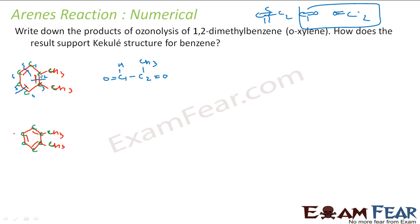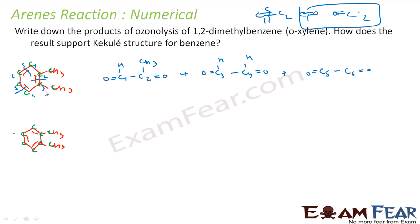Now breaking C3–C4: C3 has a CH3 group and gets a ketone; C4 also gets a ketone. Then breaking C5–C6: neither C5 nor C6 has a methyl group so we add hydrogen on both sides, giving glyoxal. Importantly, C3 also has a CH3 attached, so that product is the same as C1–C2 — they are identical. So the square-marked products are the same compound.